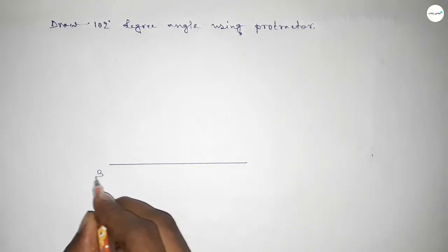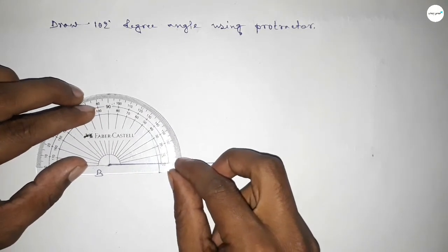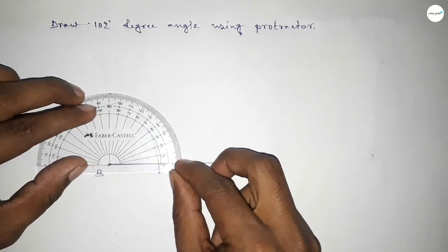Then taking here point B and here point C. Now putting the protractor on the point B perfectly, then counting the angles.